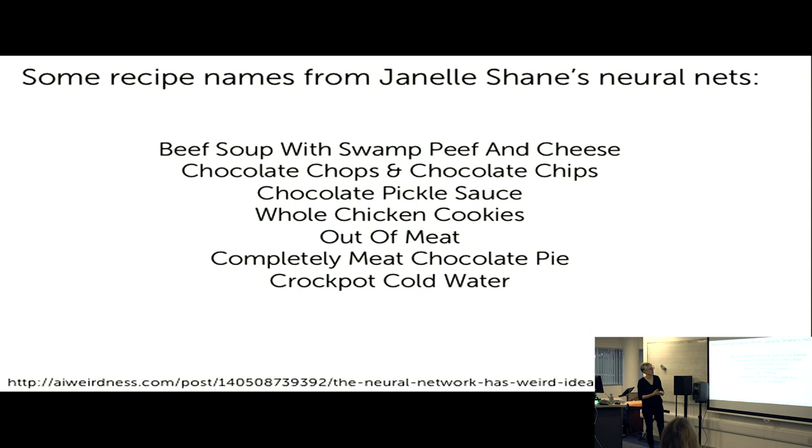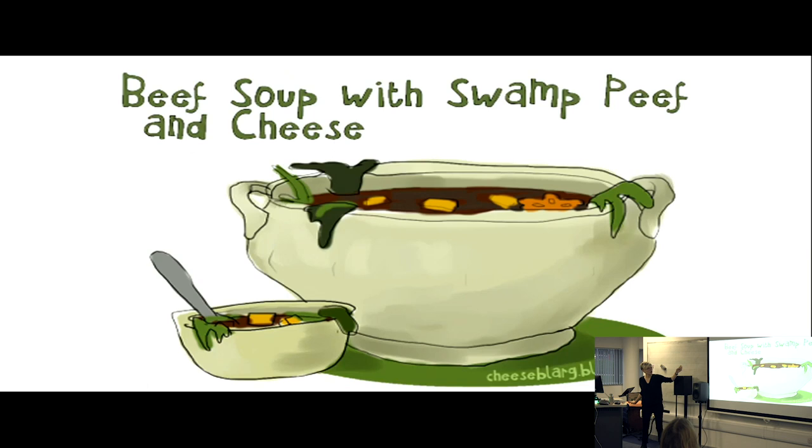And, of course, I promised I'd come back to Janelle Shane. She's done a bunch of these text generation projects. One of my favorites is recipe names. And so she just gave it thousands of recipe names. And it came out with things like beef soup with swamp beef and cheese. Chocolate chops and chocolate chips. Chocolate pickle sauce. Whole chicken cookies. Out of meat. Completely meat chocolate pie. Crackpot cold water. So these are hilarious. No human recipe writer has been replaced by this, but you're all laughing. This is bringing people joy. And, in fact, she has such rabid fans that love her work so much that some of them have actually made these into real projects. And, one person made a whole lovely illustrated guide to all these recipes. This is inspiring human creators. This is just great stuff.